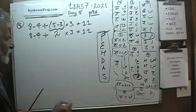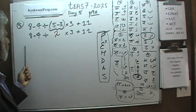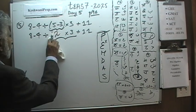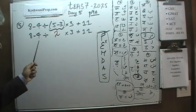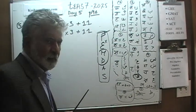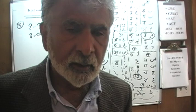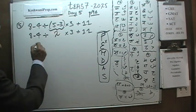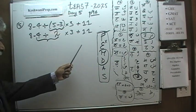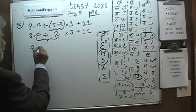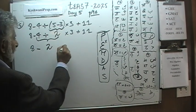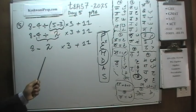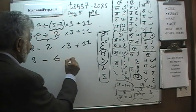Are there any exponents? No. The next step is multiplication and division. We have both — a division and a multiplication. They have the same priority, so we move from left to right. Division appears first, so we do division first. 4 divided by 2 is 2, giving us: 8 minus 2 times 3 plus 11. Now we do the multiplication: 2 times 3 is 6, giving us: 8 minus 6 plus 11.